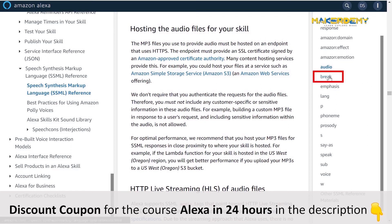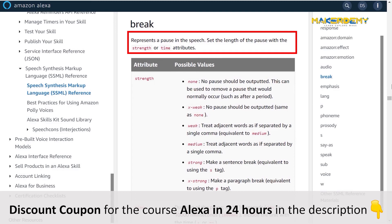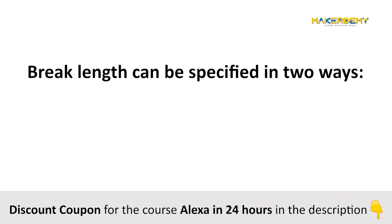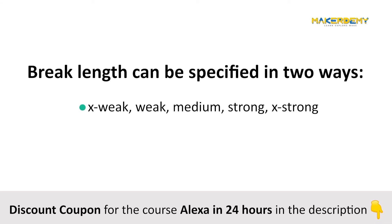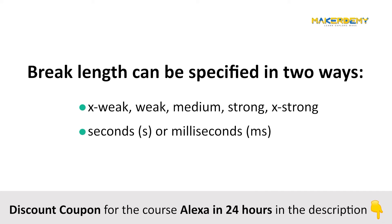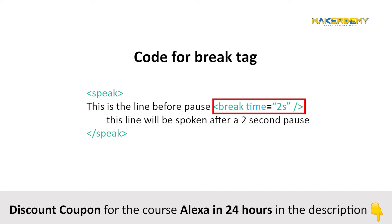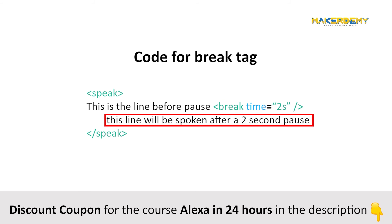Next, click on break. We can use break tags to control the length of the pause in between speeches. We can specify the break length in two ways: by defining the strength, such as weak, medium, strong, and so on, or by specifying the length of the break in seconds or milliseconds. This is a sample implementation code for break tags. After converting a line of text into speech, Alexa will leave a break for two seconds before delivering the next line as speech.